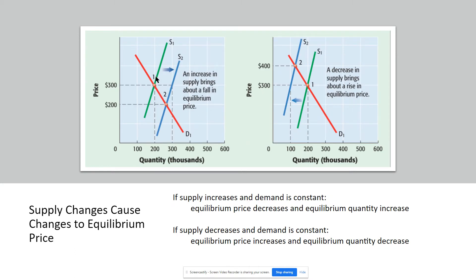The same thing happens for supply. Demand is going to be the constant — it does not change. Something has happened to supply: the number of suppliers has increased, or maybe the cost of resource prices has fallen. So my supply curve has shifted to the right. Originally where D1 and S1 intersect, that was my equilibrium price. However, now that supply has shifted to the right, my new equilibrium price — based on D1 and S2 — is $200.